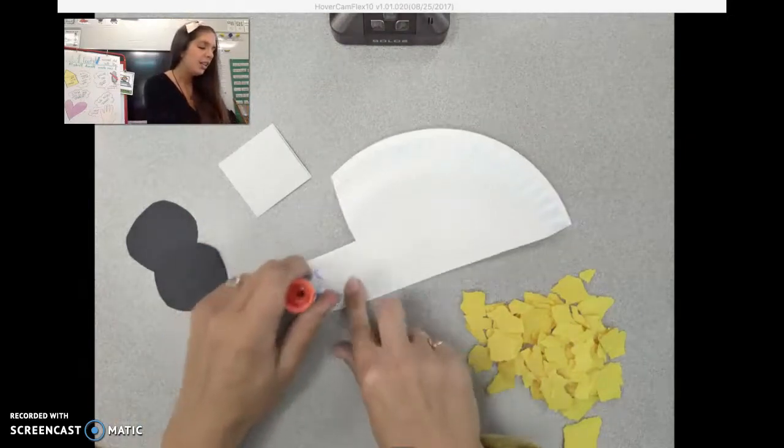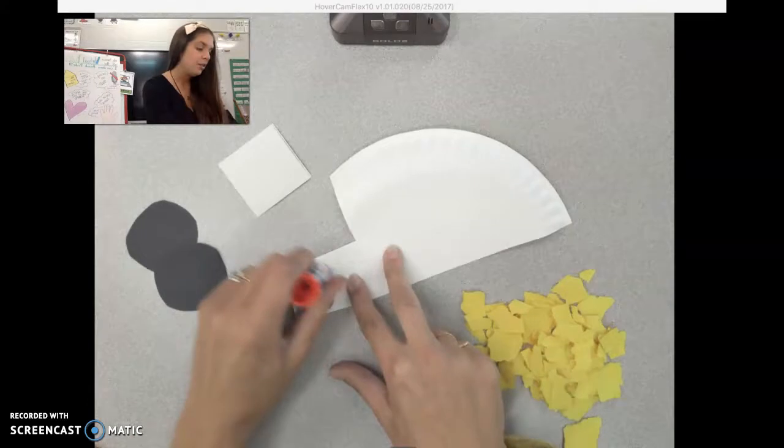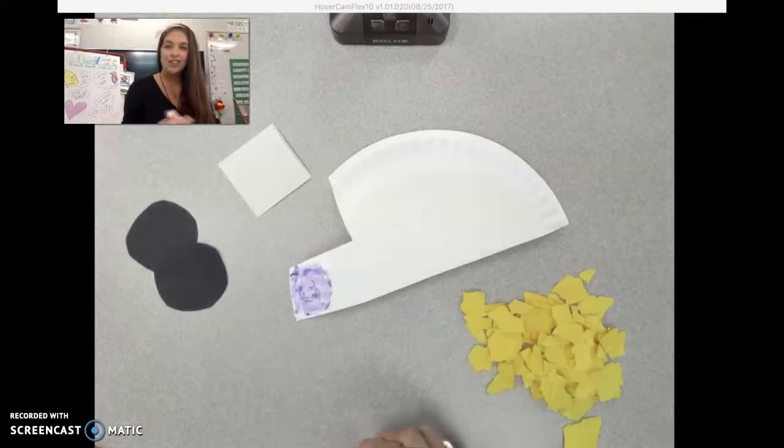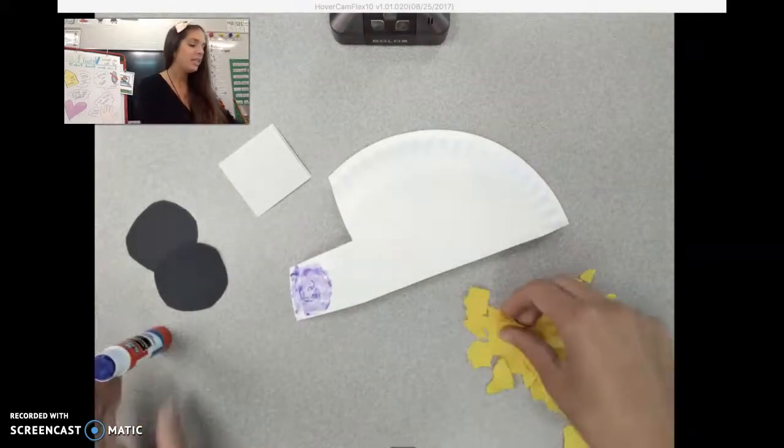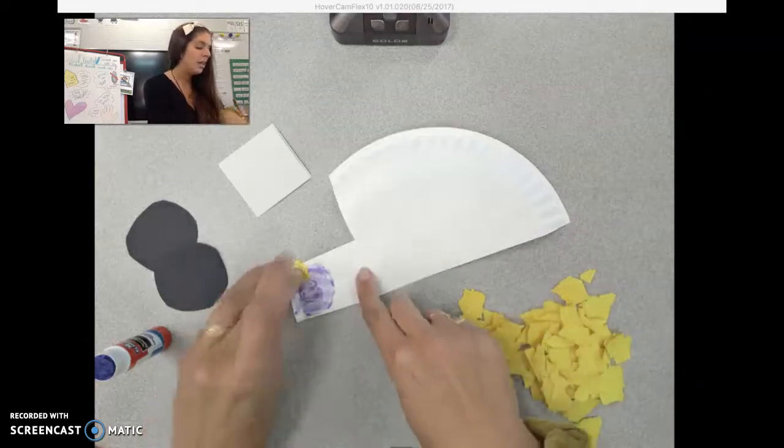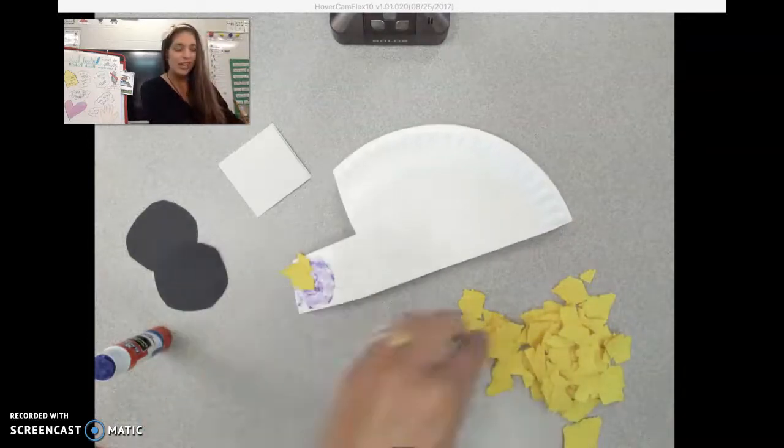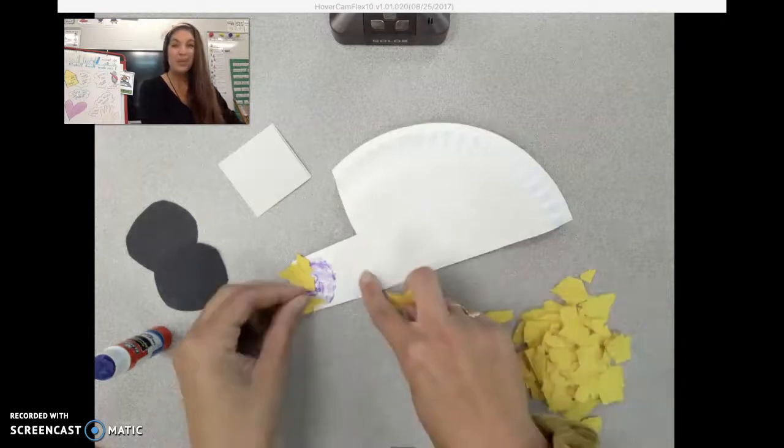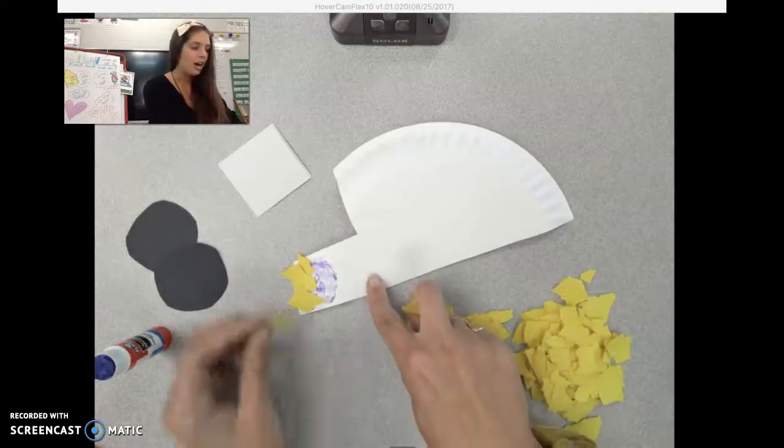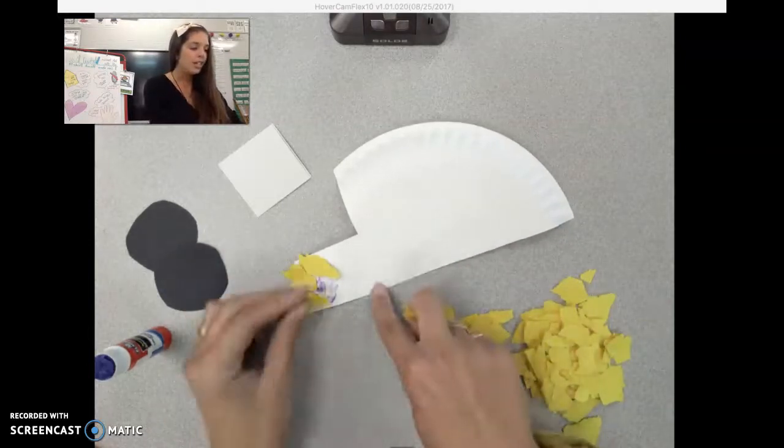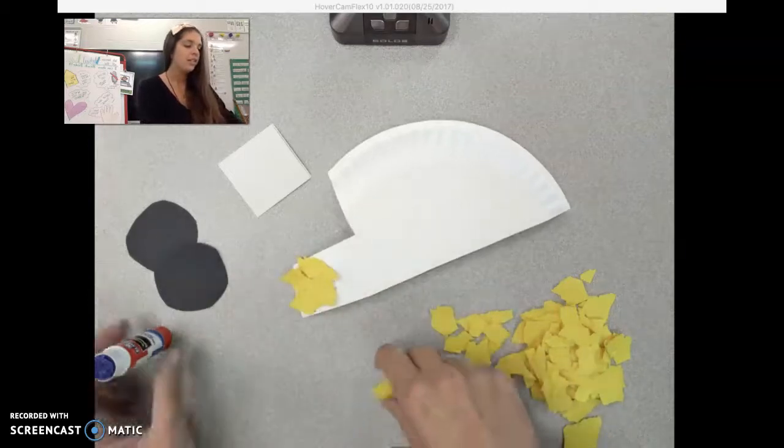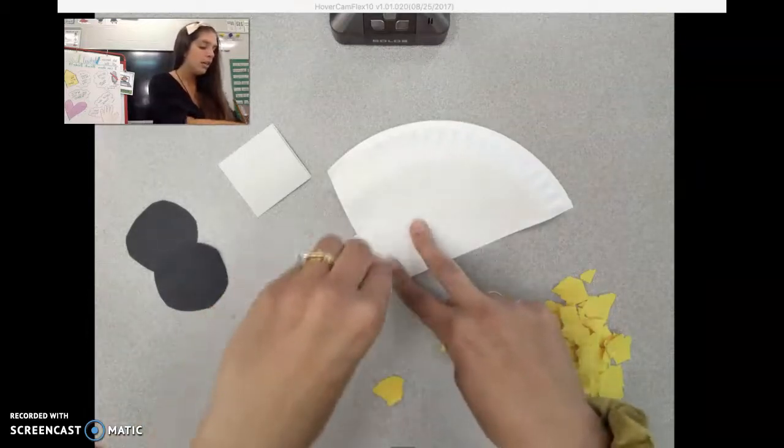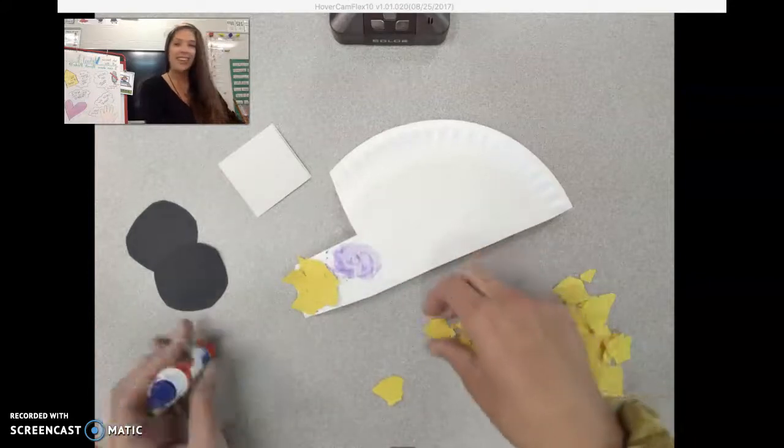I am just going to do a little section at a time. Do you see how it is just a little circle of glue? Then I am going to stick some yellow pieces on. I don't want to do too big of a glue spot because I don't want the glue to dry. That is why I only did a little bit. We are going to keep gluing a little chunk and then filling it in.